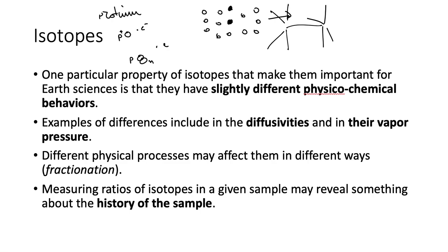Vapor pressure is also different — heavier isotopes condense more easily than lighter isotopes. These are very small differences, but they may be big enough to be noticeable. The process when physical processes affect the ratio of lighter to heavier isotopes of a certain material is known as fractionation. So if you start with a material where 10% of the atoms are heavier atoms, do something, and end up with only 1% heavier isotopes, we say the material has fractionated because its ratio has changed.